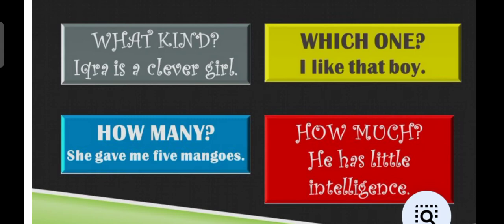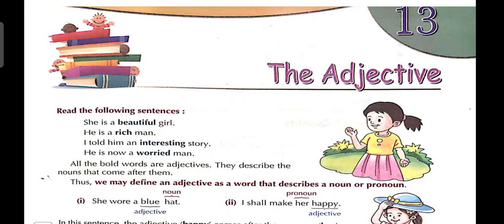What kind, which one, how many, how much. Erica is a clever girl. कैसी है? Clever girl है, so clever is an adjective. I like that boy. She gave me five mangoes. How many? Five mangoes. How much? He has little intelligence, so little is an adjective.